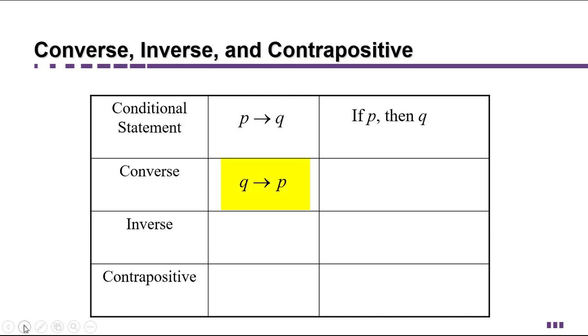if you turn the implication around and you say if Q then P, we call that the converse. That's what we get when we reverse the conditional.